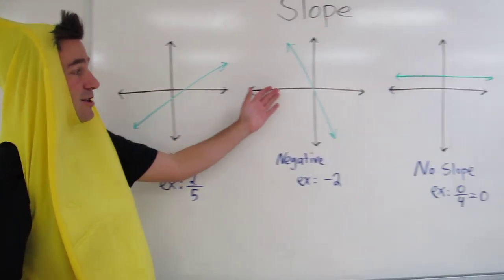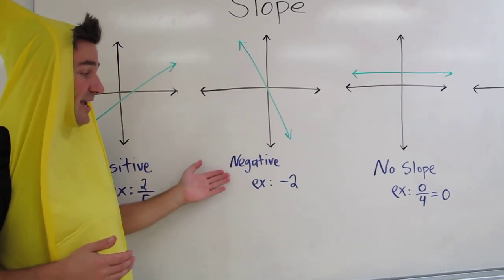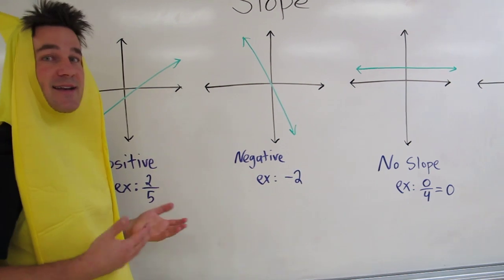This next slope, looking from left to right, is going down. So we say this is a negative slope. An example of a negative slope would be negative 2.